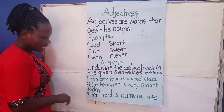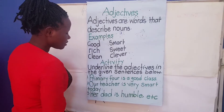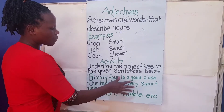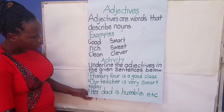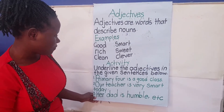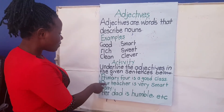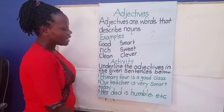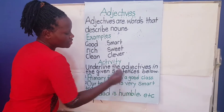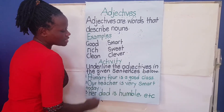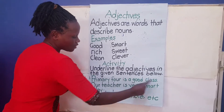Let us read number one: Primary four is a good class. Which is the adjective in number one? I will give you the answer. The adjective in number one is good, and class is a noun. Good is the adjective — we are describing the noun, the class, for number one.